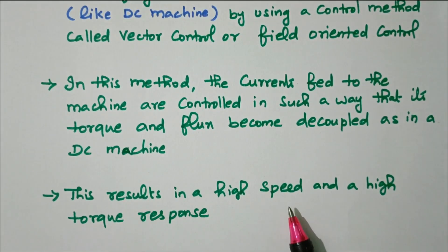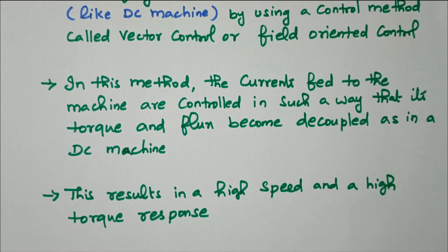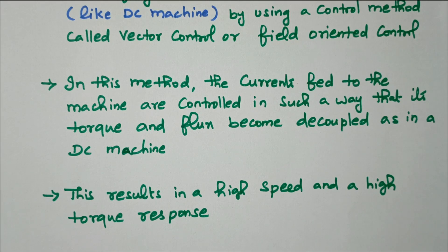This results in high speed and high torque response. However, it is not yet implemented practically — it is still under research, converting three-phase squirrel cage induction motors into high power servo systems using vector control. In this video we discussed the AC servo motor: it is used for position control, not continuous rotation. DC and AC servo motors are both available. In AC servo motors there are two types — two-phase and three-phase. Three-phase is under research; two-phase uses 90-degree phase difference between the applied voltages of the main winding and control winding to achieve position control.